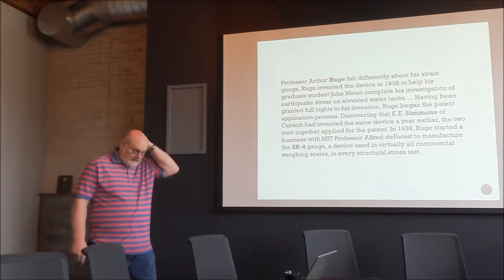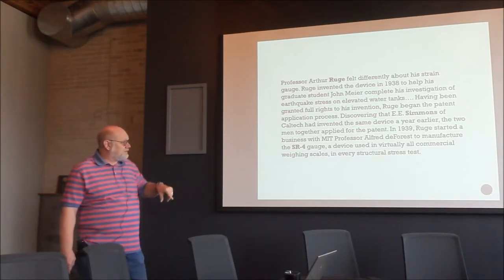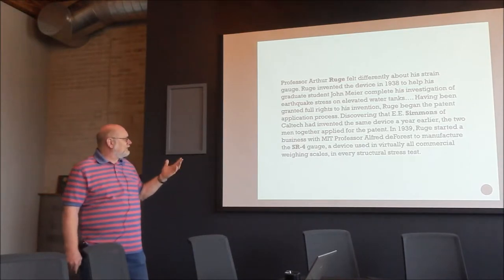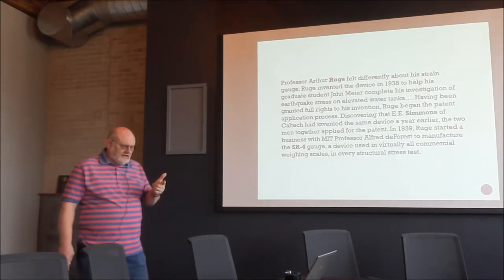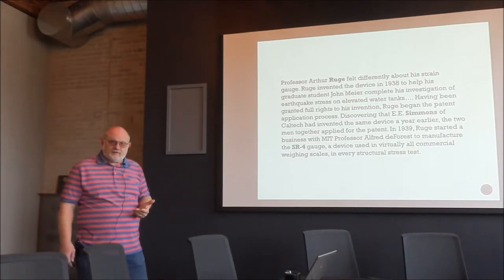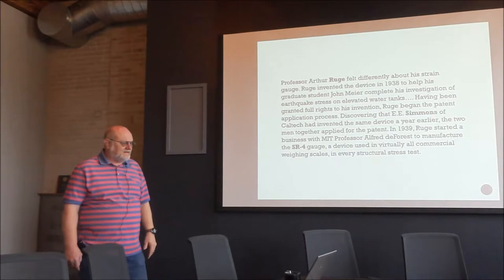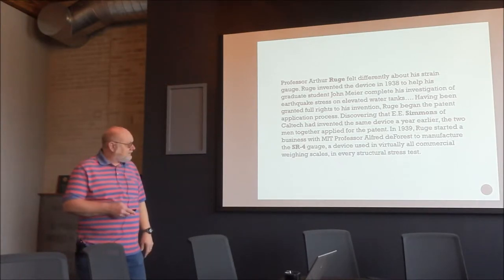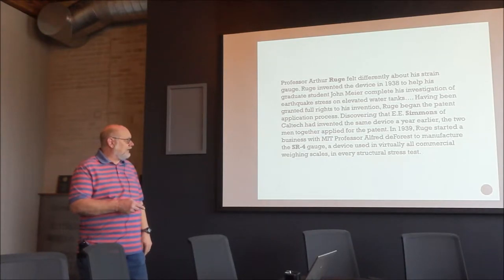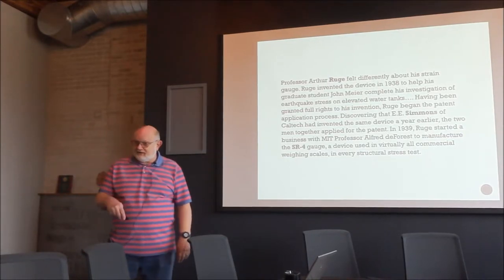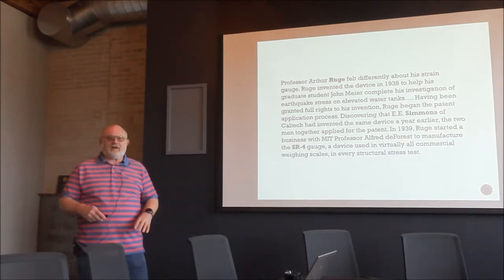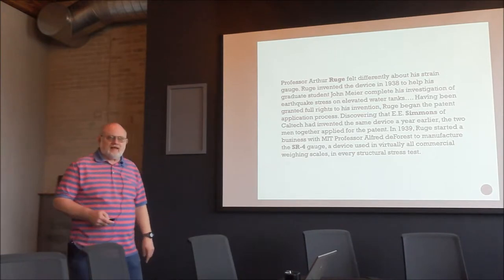Ruge felt differently about his invention. While helping a grad student in seismology, he went to patent it and discovered that Simmons at Caltech had already done similar work a year earlier. The two collaborated and patented it together, then partnered with someone at MIT to produce the SR4 gauge — named after Simmons as first inventor and Ruge as second. Those gauges are still available today as free-filament wire gauges, originally applied with Duco cement.